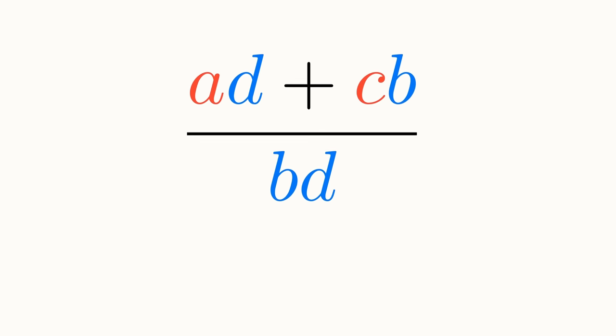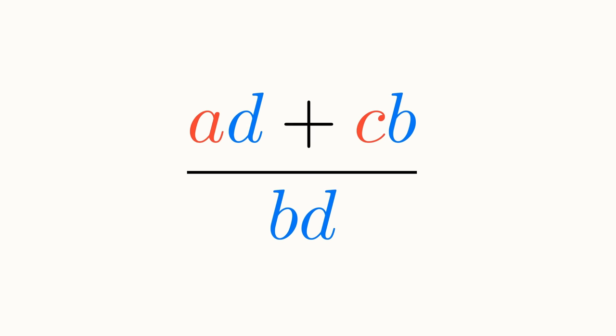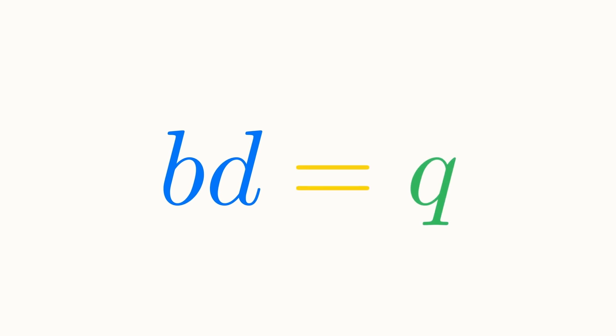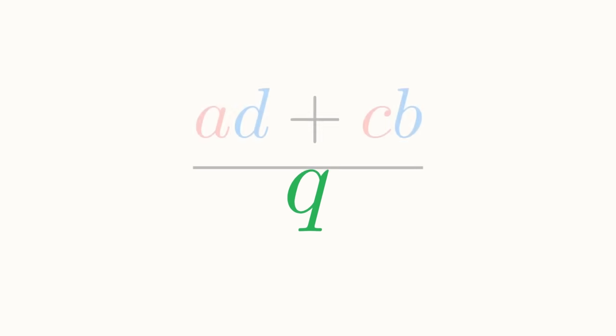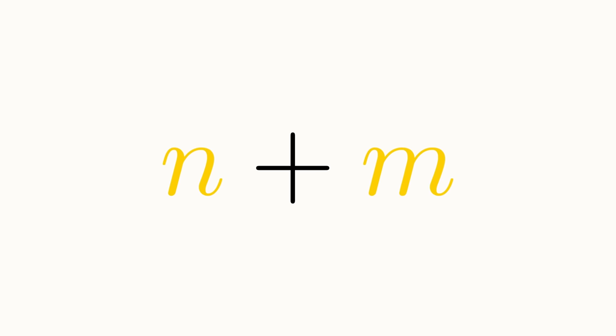To complete our proof, we need to yet again apply some more abstraction. The details that are irrelevant this time is how the numerator and denominator are composed. The fact that the denominator is a product of integers is really not important to us. However, once we notice that two integers multiply together always give another integer, we can replace this product with another arbitrary integer. We'll call it Q. We can follow this same procedure for the numerator, replacing A times D with N and C times B with M. Finally, we can reason that the sum of any two integers must also be an integer, meaning that we can yet again replace the numerator with another arbitrary integer. Let's call this one P.